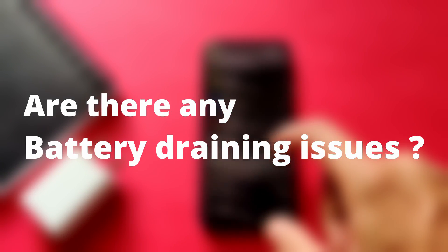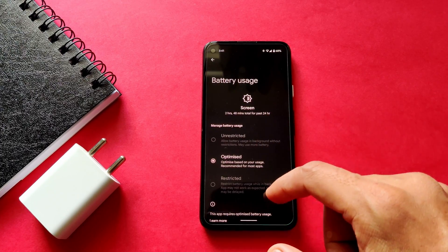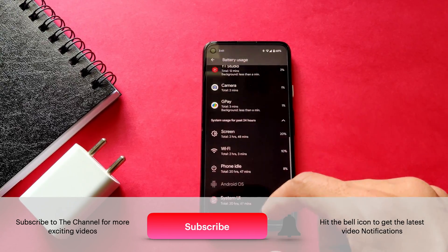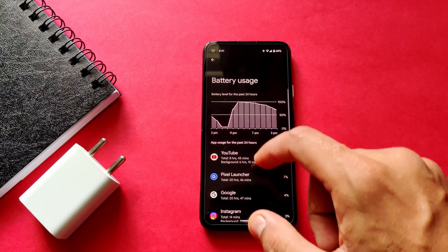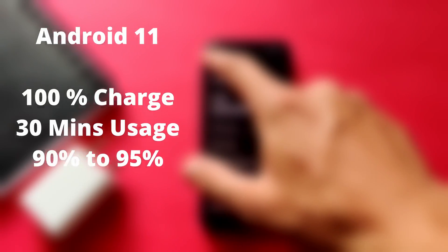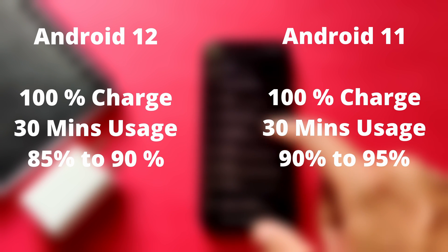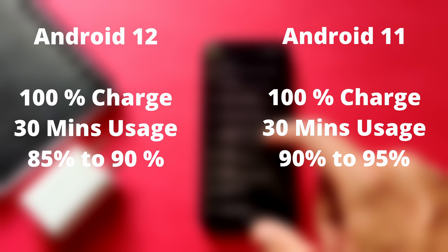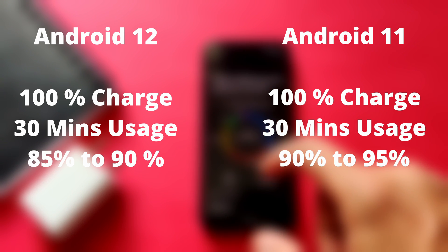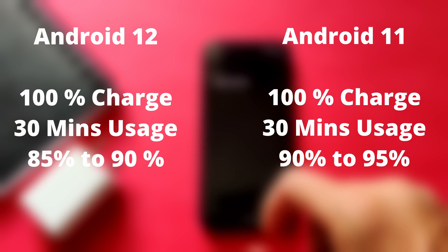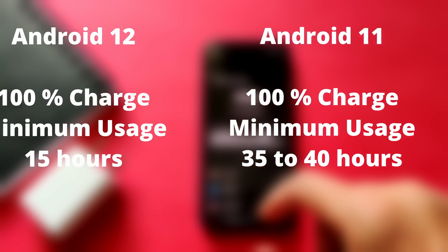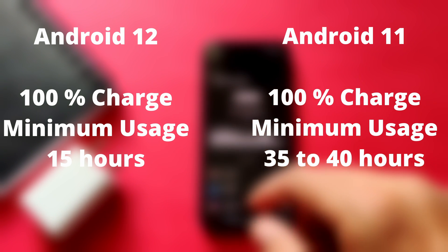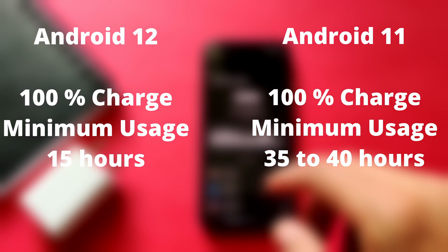There are definitely battery drainage issues after Android 12. We can divide this into two categories: when you are using the phone and when the phone is idle. In both scenarios the battery drains a lot faster compared to Android 11. After a full charge, the battery percentage falls quickly — in Android 11 it used to stay for a long time between 95 to 100 percent, but now within 20 to 30 minutes you lose 10 to 15 percent. In idle state, my Pixel 4a used to stretch to two days and now it is hardly lasting for a day.